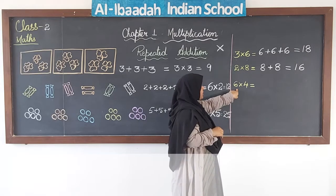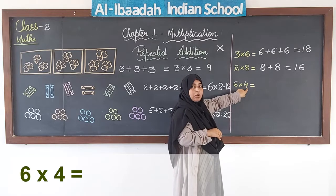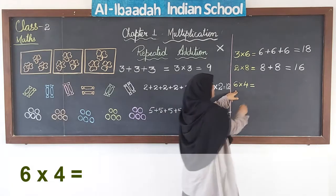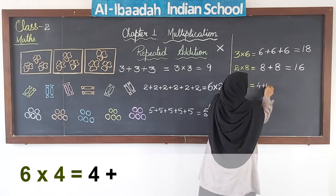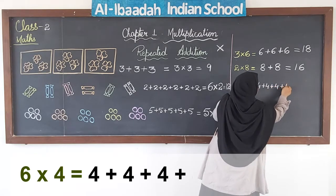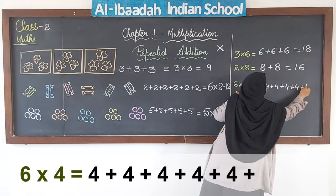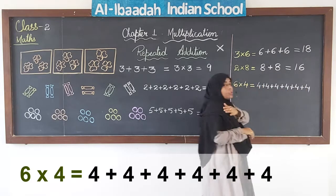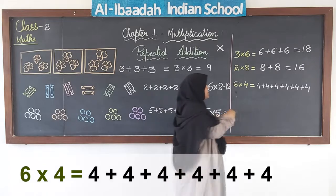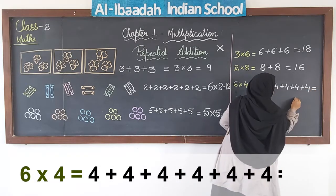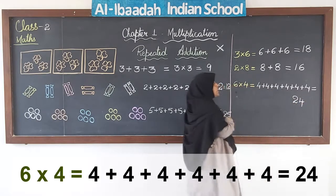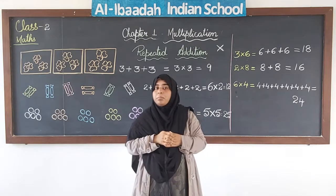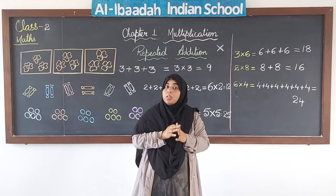The last example is 6 times 4, or 6 into 4. 4 is added 6 times. So 4 plus 4 plus 4 plus 4 plus 4 plus 4 — I have added 4 six times, and the answer is 24. This is how we form multiplication facts or the multiplication tables.